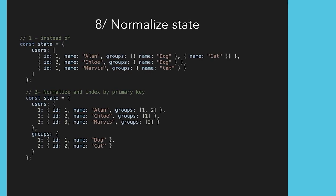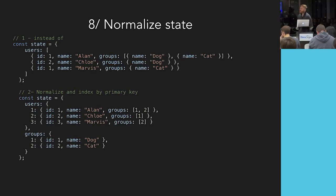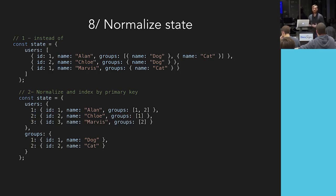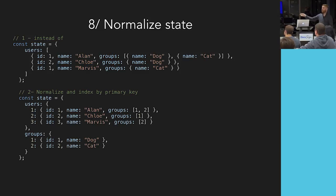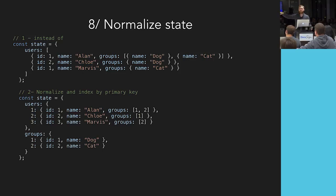Concretely, the first non-normalized state has a group object with duplicated information. The normalized version just stores references or IDs and a separate nested groups element. Why is it better? If I want to rename 'dog group' to 'dog lovers,' in the non-normalized version I have to go through every user and update each entry. In the normalized version, I update one place. We're using Redux to have predictable state — forgetting to update one entry defeats the purpose. You have helpers available: 'normalizer,' which converts a denormalized state to normalized automatically, and 'denormalizer,' which structures data the way you want to display it.